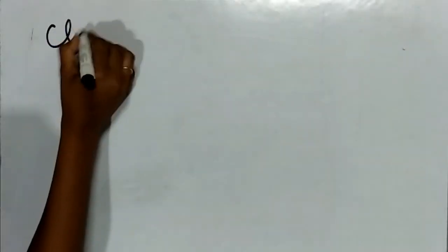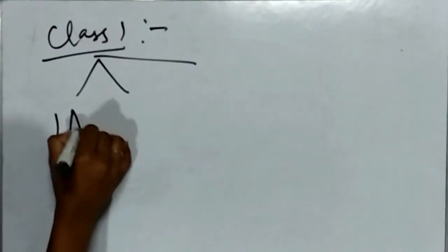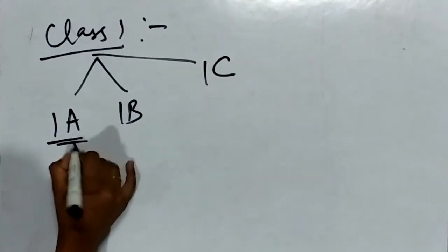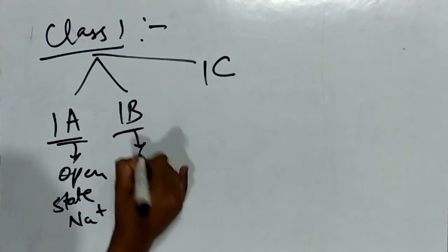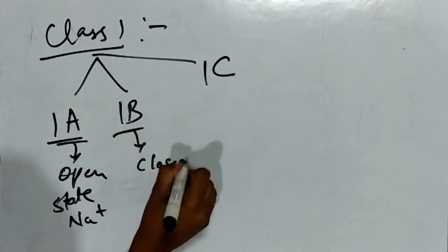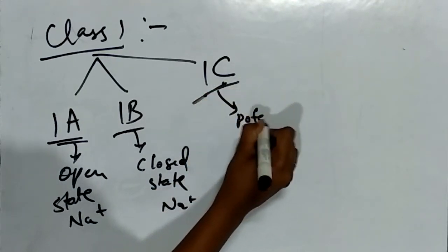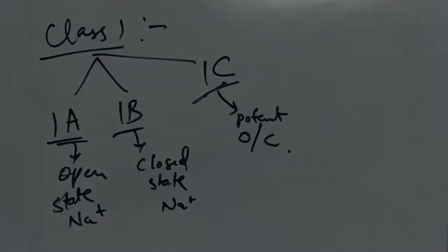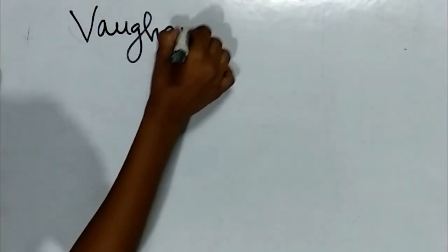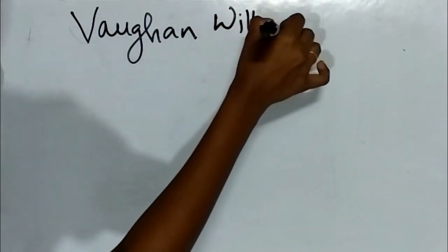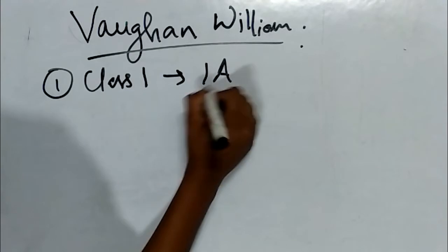First we will see class 1 drugs. The class 1 drugs are divided into 3 types: 1A, 1B, and 1C. 1A drugs act on open state sodium channels. 1B drugs act on closed state sodium channels. And class 1C drugs are potent sodium channel blockers acting on both open and closed states. This classification was given by scientist Vaughan Williams.